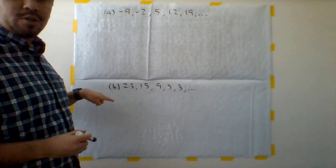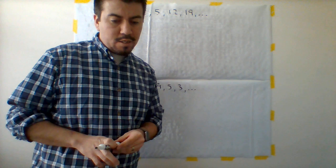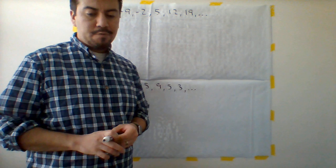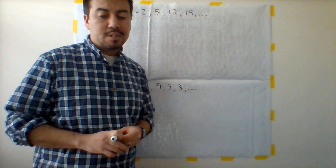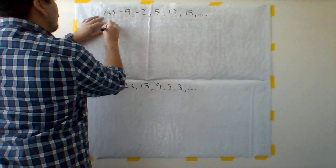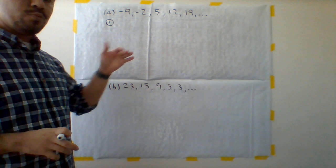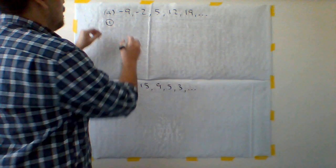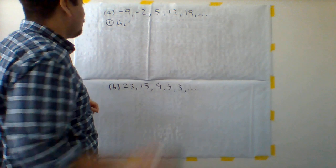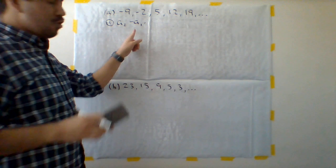First one says negative 9, negative 2, 5, 12, and 19. So first step says to find the difference of the terms by subtracting the later term from the previous term. I'm going to start off with putting step 1 there. Now I want to identify which term is which as we go through. We have a2 minus a1, which means the second term minus the first term, a later term minus a previous term.